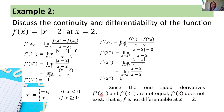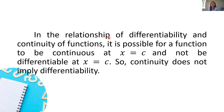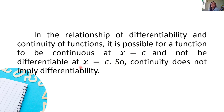Since the one-sided derivatives — f prime of 2 from the left equals negative 1 and f prime of 2 from the right equals 1 — are not equal, f prime of 2 does not exist. That is, f is not differentiable at x equals 2. It is possible for a function to be continuous at x equals c and not be differentiable at x equals c. So continuity does not imply differentiability. Solving for continuity does not automatically mean the function is also differentiable.